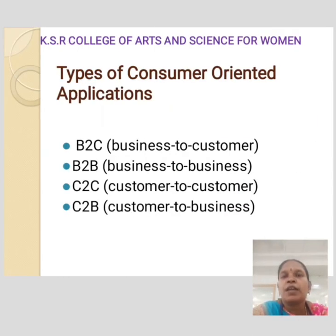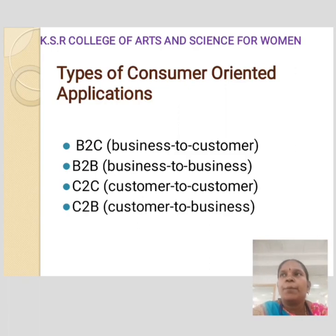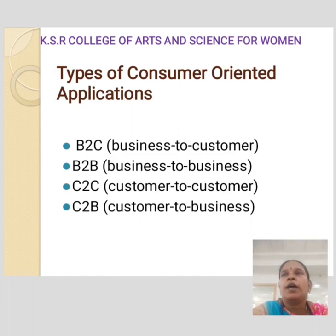Types of consumer-oriented applications. There are four types: B2C, B2B, C2C, and C2B. B2C stands for Business to Customer. Electronic commerce is generally understood mostly as selling goods or services to people. This is not so far the main part of the online business.